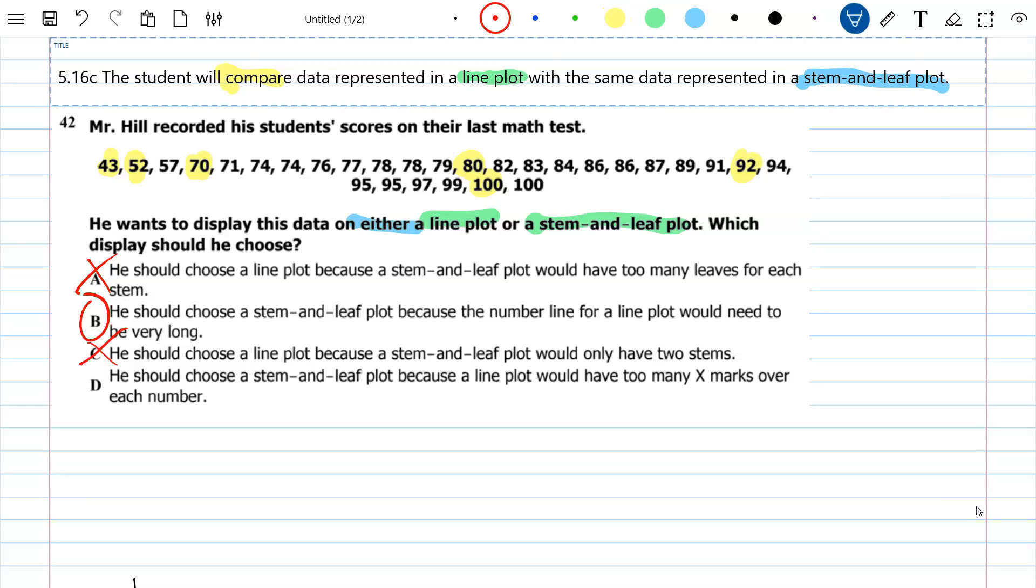And finally, D. He should choose a stem and leaf plot because a line plot would have too many X marks over each number. And that's wrong, and I'm about to show you in a minute why it's wrong. Because actually, I would only have two X's over each of these numbers. So even though a stem and leaf plot is my best choice, D gives me the wrong reason for why a stem and leaf plot.